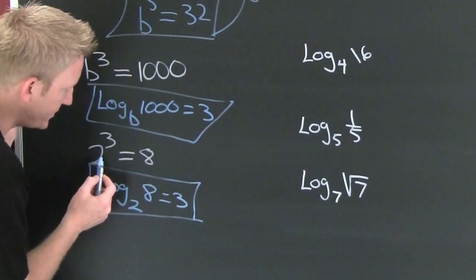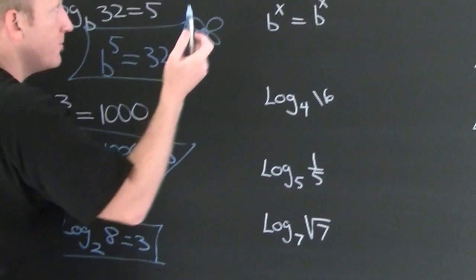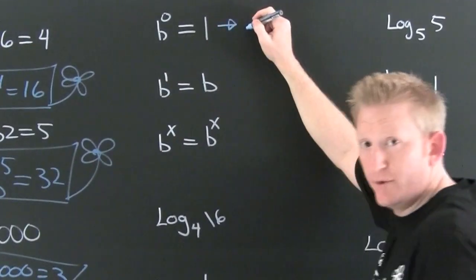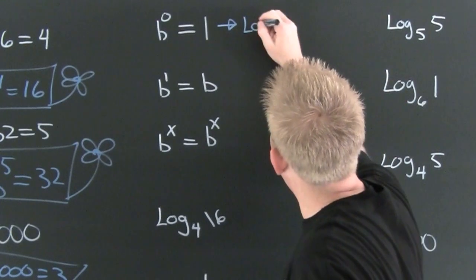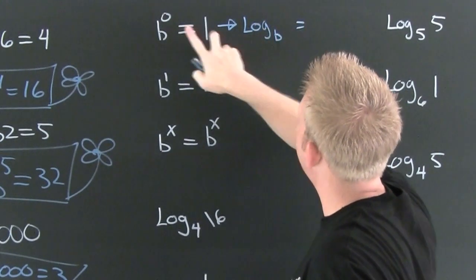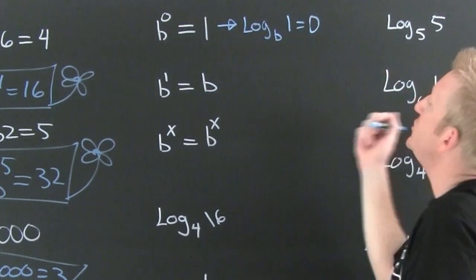Now here we see this is a true statement. Two to the three is eight. Great. I'm going to come up here to some other true statements. If I was looking for the equivalent logarithm, this would be log base b of, wait for it. Ba-doop. Yes.